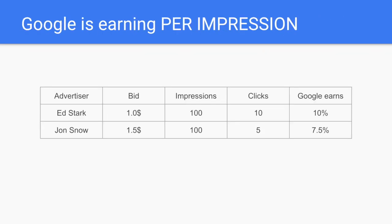Coming back, one more thing you should know is why this all works this way. It's not only because Google Ads is trying to satisfy each customer, but also because Google earns not on clicks, but on impressions — this is the one thing Google cannot change in its business model. Imagine you have a grocery store and the only thing you can't directly affect is how many people enter the door every day. But what you can change is how much money people spend after they enter. Google is trying to do the same — earn as much money today and tomorrow, from both strategic and tactical points of view.